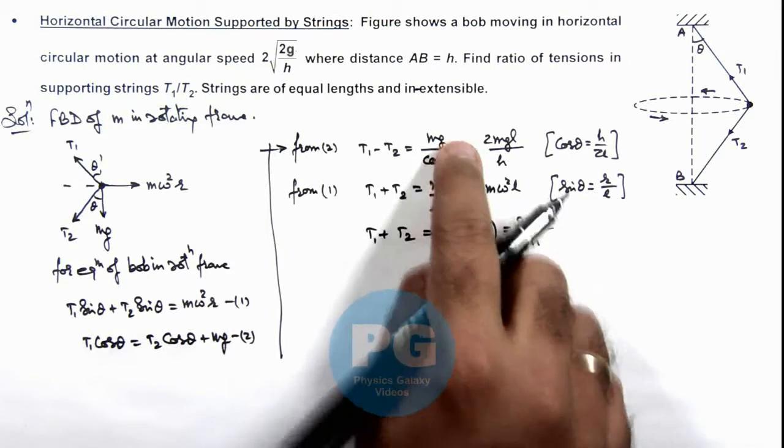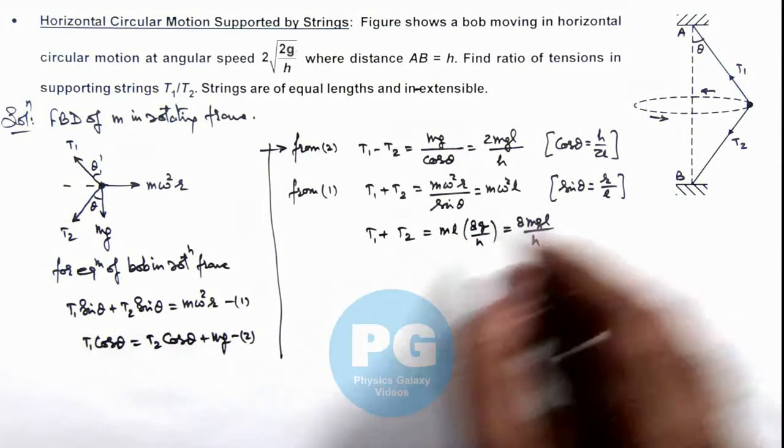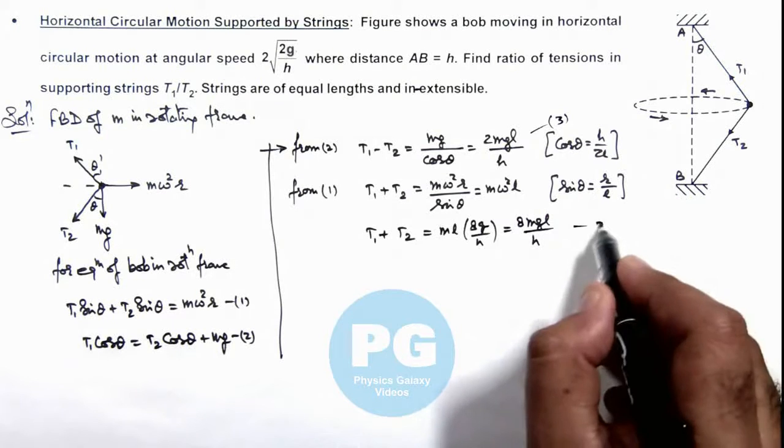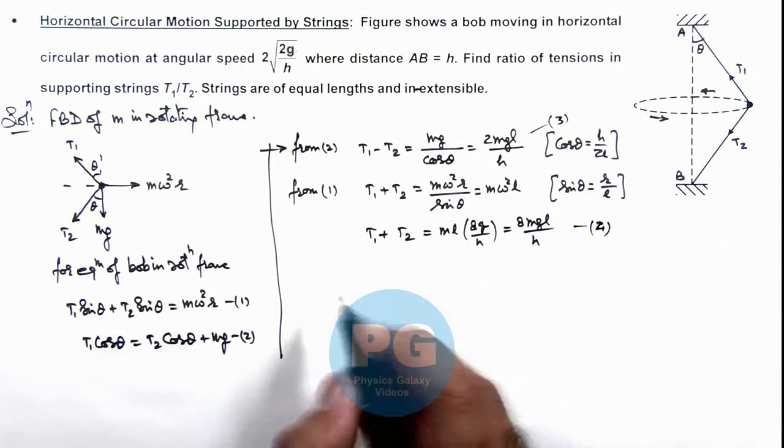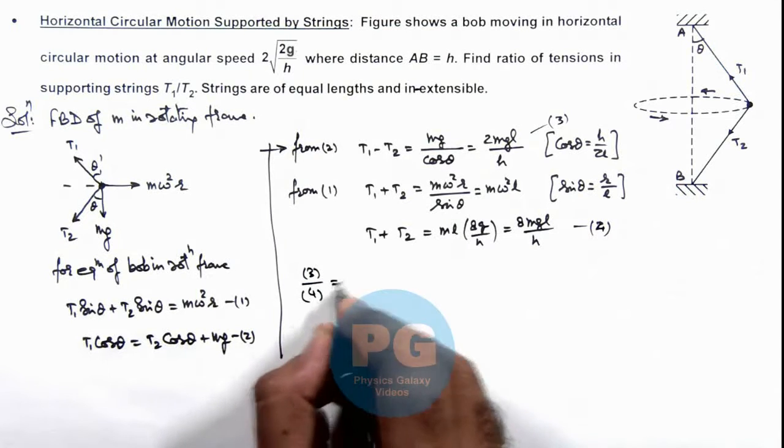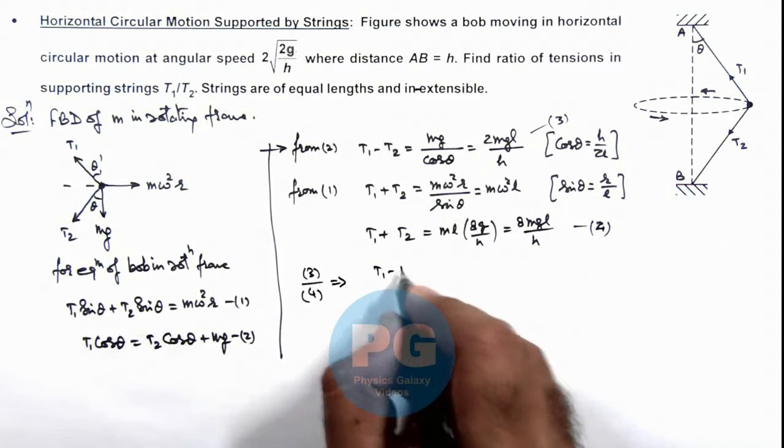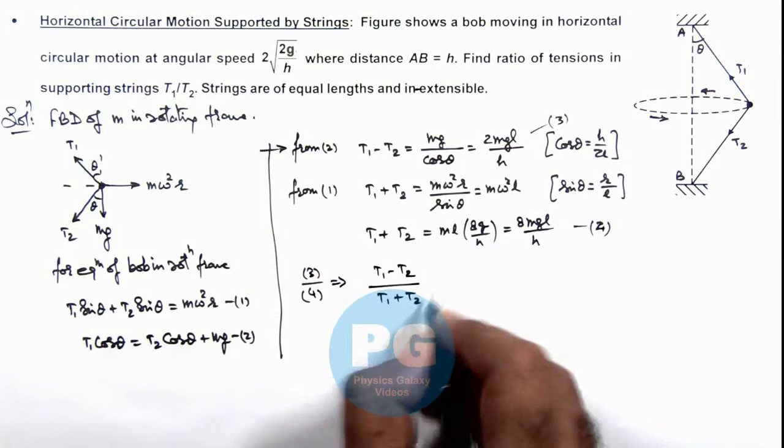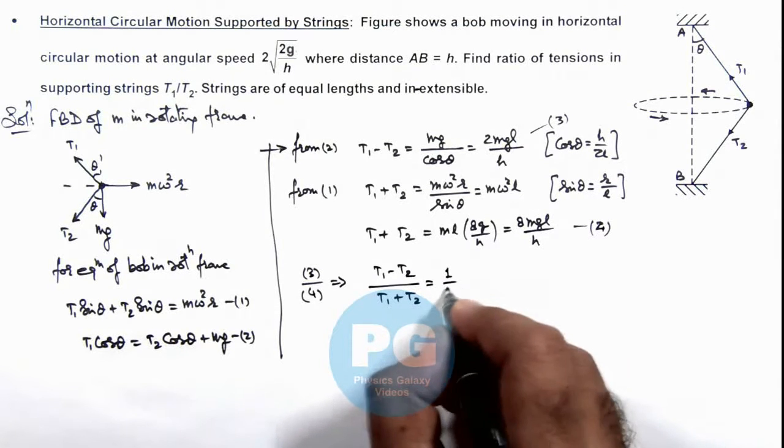Now if we divide these two equations, you can see this is equation 3 and this is equation 4. Then dividing 3 by 4 will result as (T₁ - T₂)/(T₁ + T₂) = 1/4.